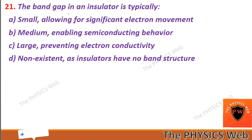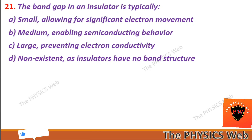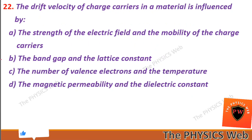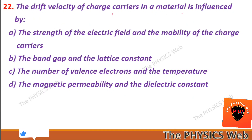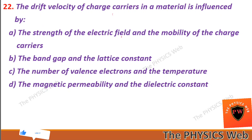Next, question twenty-one: the band gap in an insulator is typically large, preventing electron conductivity. So C is your correct option. Question twenty-two: the drift velocity of charge carriers in a material is influenced by the strength of the electric field and the mobility of the charge carriers. So A is your correct option.